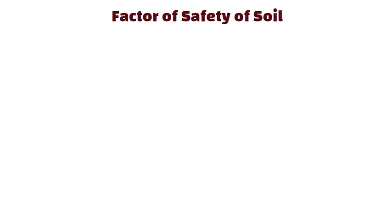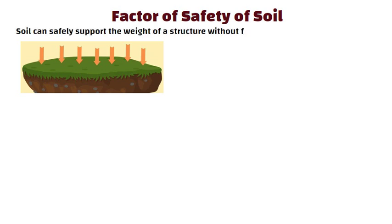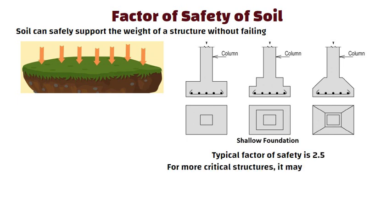Factor of safety of soil. The factor of safety is used to ensure that the soil can safely support the weight of a structure without failing. For shallow foundations like footings or slabs, the typical factor of safety is 2.5. In some cases, for more critical structures, it may be increased to 3.